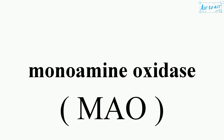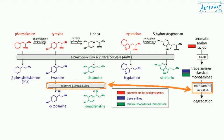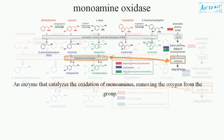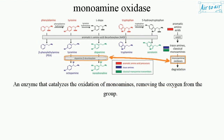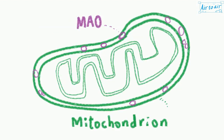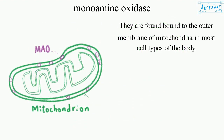Monoamine oxidase is an enzyme that catalyzes the oxidation of monoamines, removing the oxygen from the group. They are found bound to the outer membrane of mitochondria in most cell types of the body.